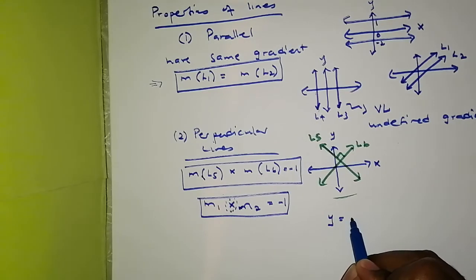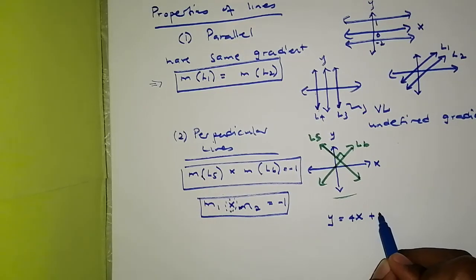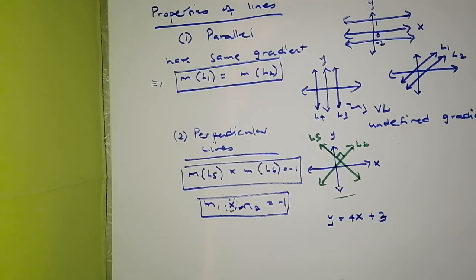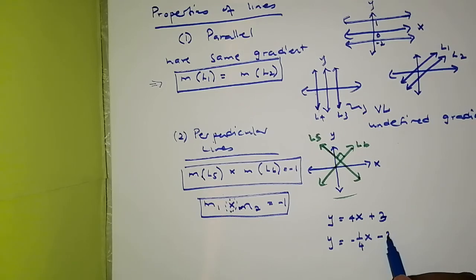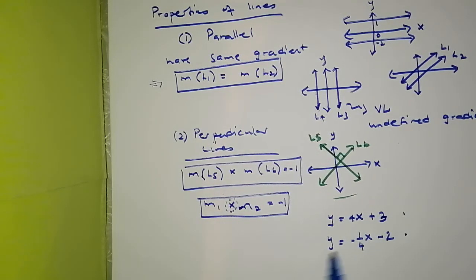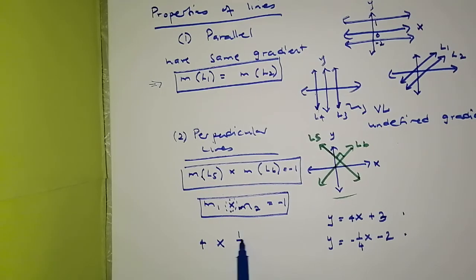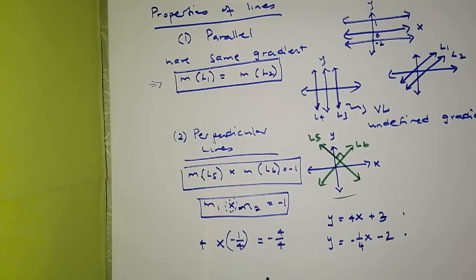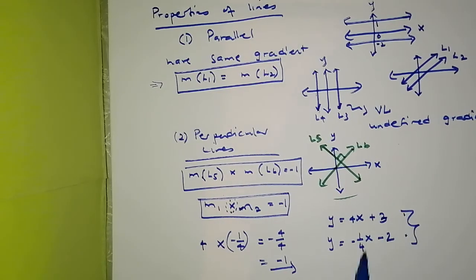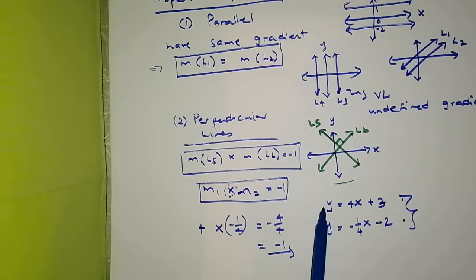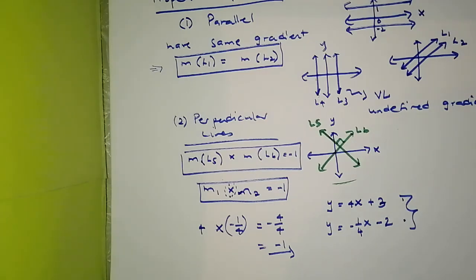Let's say you have the line y = 4x + 3 and another line y = (−1/4)x − 2. The gradient of the first line is 4 and the gradient of the second is −1/4. Multiplying: 4 × (−1/4) = −4/4 = −1. The product of their gradients equals negative one, so these two lines are perpendicular.